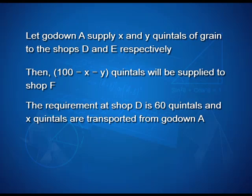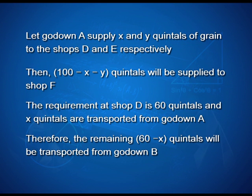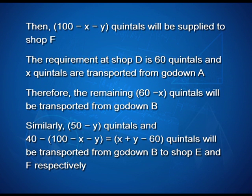Shop D's requirement was 60 quintals and it has already received x quintals from A, so the remaining 60 minus x quintals must be transported from godown B. Following that logic, 50 minus y quintals must come from B to E, and the remaining requirement of shop F will be met by B, which amounts to 40 minus (100 minus x minus y), or equivalently x plus y minus 60.